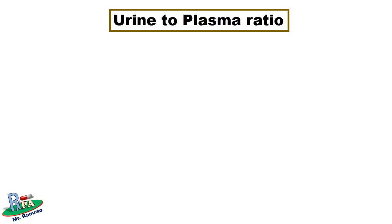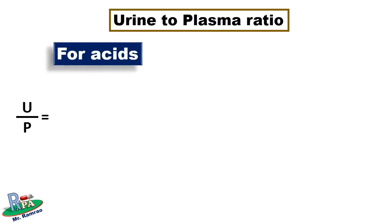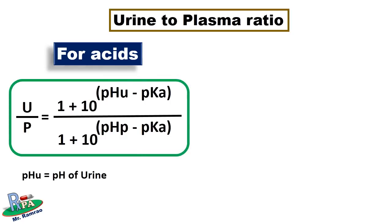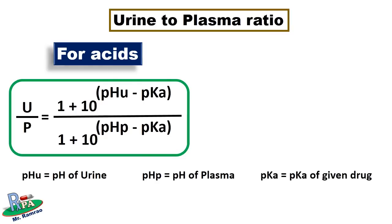First we'll discuss the formulae, then we'll see how to solve the problem. For acids, the urine-to-plasma ratio is equal to: (1 + 10 raised to the power of pH of urine minus pKa) divided by (1 + 10 raised to the power of pH of plasma minus pKa), where pHu is the pH of urine, pHp is the pH of plasma, and pKa is the pKa of the given drug. You just have to use this simple formula for the calculation of urine-to-plasma ratio for acids.